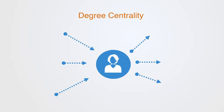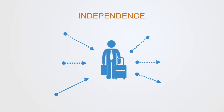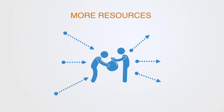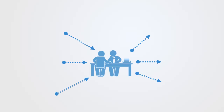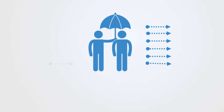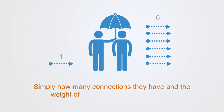Social actors who have more ties to other people may be in advantageous positions. Because they have many ties, they may have alternative ways to satisfy their needs and are less dependent on other individuals. They have access to more of the network's resources, and they are often third parties and deal makers in exchanges among others, able to benefit from this brokerage. Thus the primary measure of any actor's significance is their degree of connectivity — simply how many connections they have and the weight of those connections.